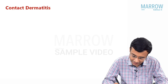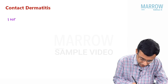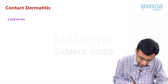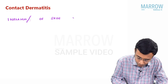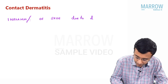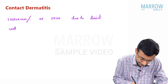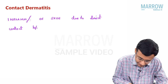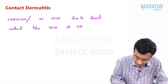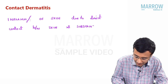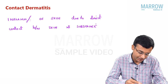Let's see what is contact dermatitis. Contact dermatitis is defined as inflammation of the skin due to direct contact between the skin and the substance. So, the inflammation of the skin which is happening due to direct contact between the skin and the substance is called contact dermatitis.